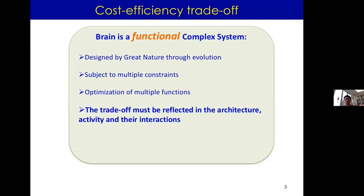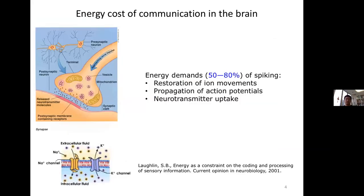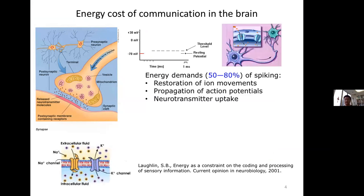This cost-efficiency trade-off must be reflected in the architecture, activity, and their interaction. As a dynamical system, we emphasize this trade-off. When considering brain-inspired intelligence, we perhaps cannot avoid being constrained by very small energy budgets. In terms of energy, the majority is used to generate spikes and their propagation through the network.